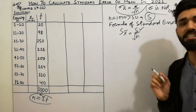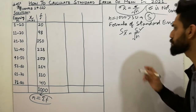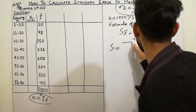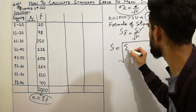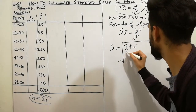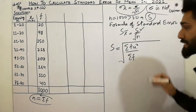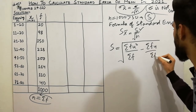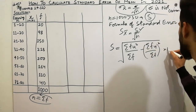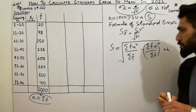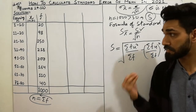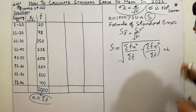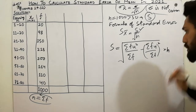The formula for standard deviation to be used here is: s is equal to square root of bracket summation f·u² divided by summation f, minus summation f·u divided by summation f, closing bracket, squared, multiplied by h. This formula will be used because we are calculating the corrected value. H is the class interval.